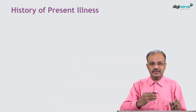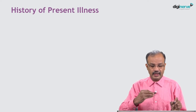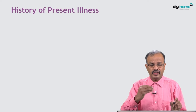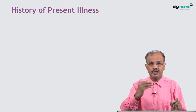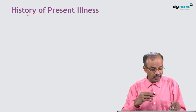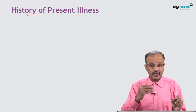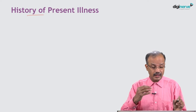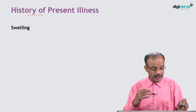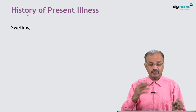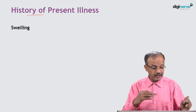In history taking, there is history of present illness, history of past illness, personal history, family history, and treatment history. We will discuss these one by one. The history of present illness is the most important part. For swelling specifically, the key questions to ask are about duration, site, mode of onset, and progress.